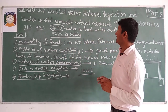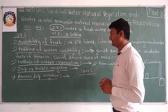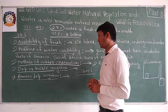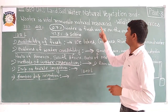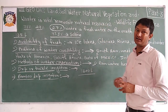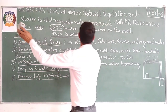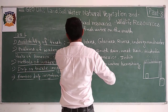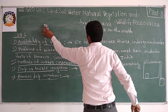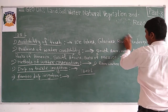This concludes our discussion about water — its availability, scarcity, and conservation. Now let us move to the next topic: natural vegetation and wildlife resources. You have already studied about natural vegetation in your previous class, and it is a very important and sensitive topic.